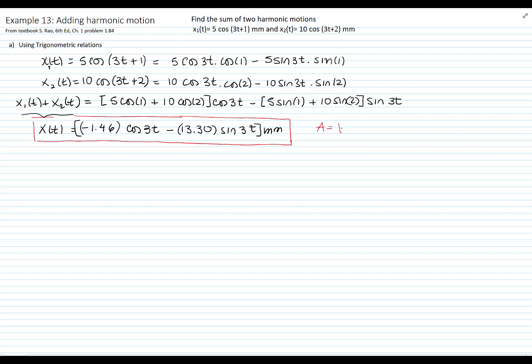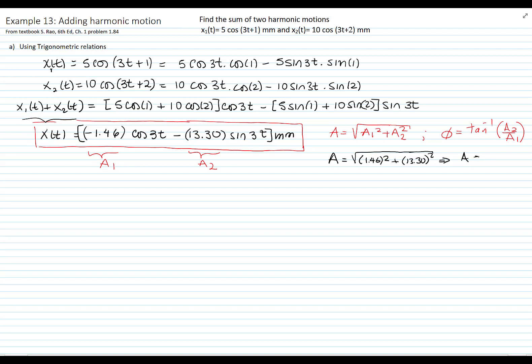Let's find that other form to present the answer. For that, we will use the definition of the magnitude, which is square root of a1 squared plus a2 squared, and the angle, the phase angle, which is the inverse tangent of a2 over a1. Therefore, A is equal to square root of 1.46 squared plus 13.30 squared. And that gives me a value for A of 13.38.